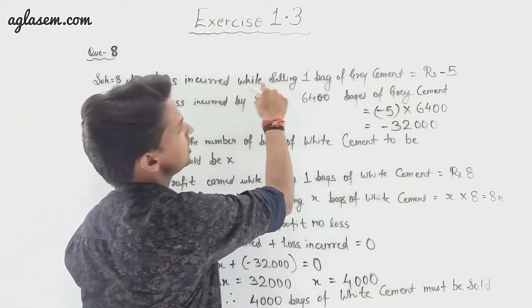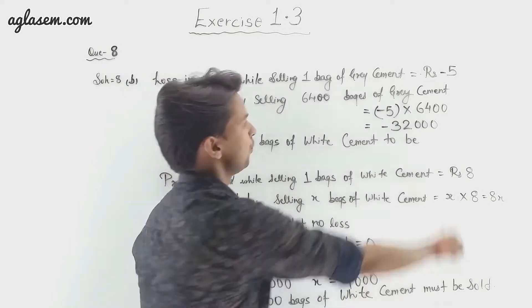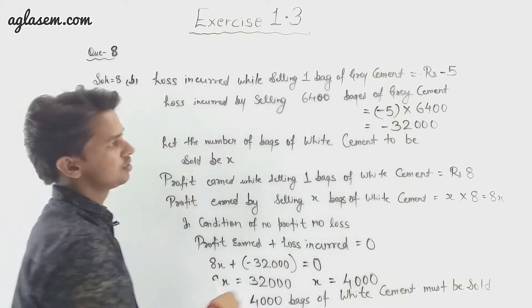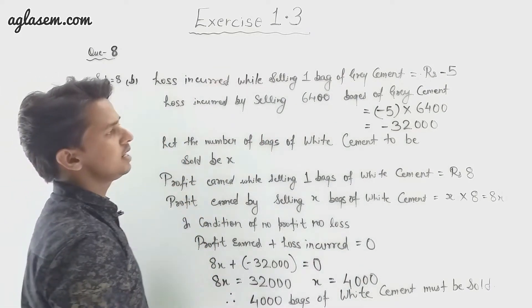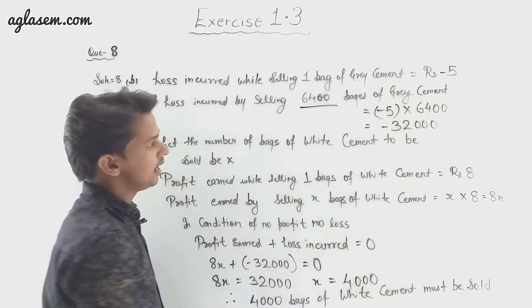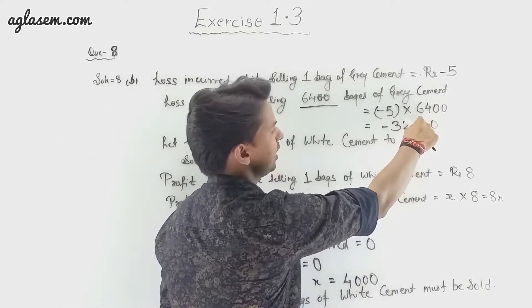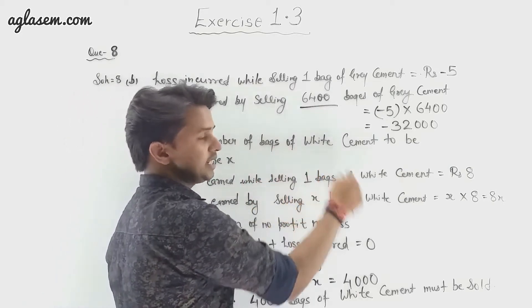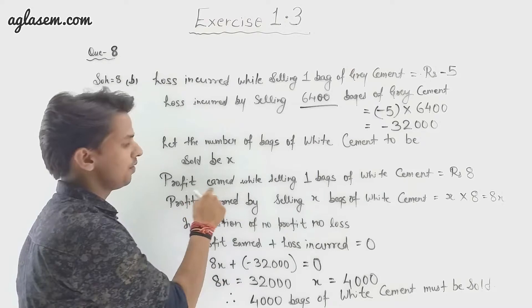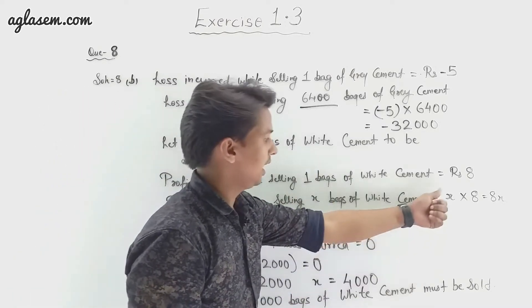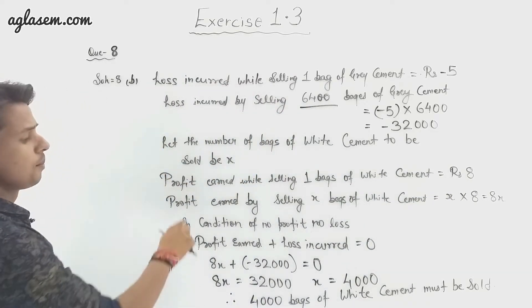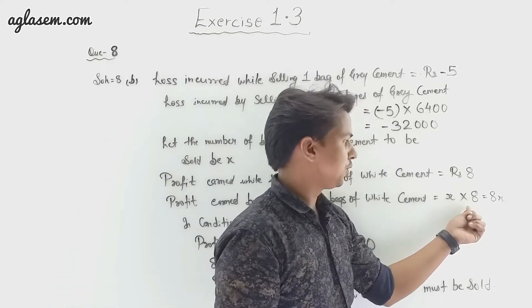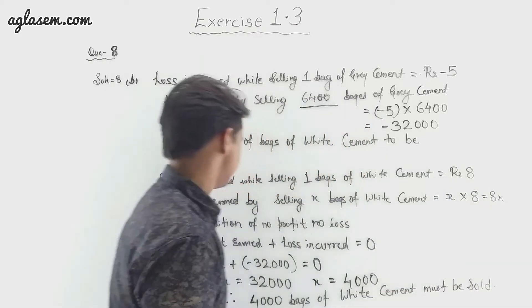Loss incurred by selling one bag of grey cement is minus 5 rupees. Loss incurred by selling 6,400 bags of grey cement is minus 5 multiplied by 6,400, which equals minus 32,000 rupees. Let the number of bags of white cement to be sold be x. Profit earned by selling one bag of white cement is 8 rupees, so profit from x bags is 8x.